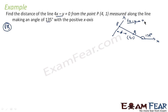The equation L1 is 4x minus y is equal to 0. There is a point (4, 1). We want to find the length of this distance from q to p if you go at an angle of 135 degrees. If we can find the equation of PQ, then we can find a common point between PQ and L1. We will have point p and point q, and we can find the distance.